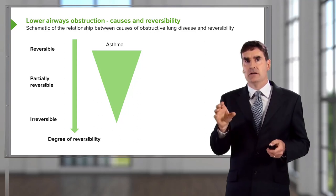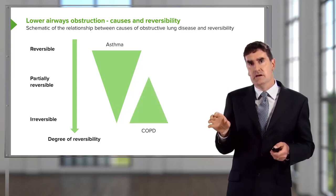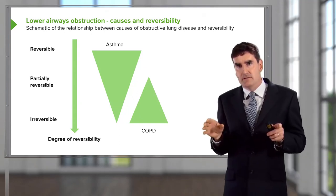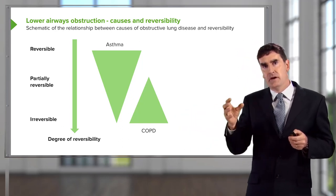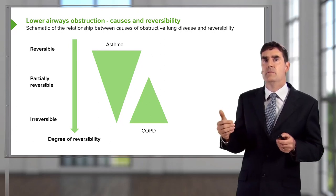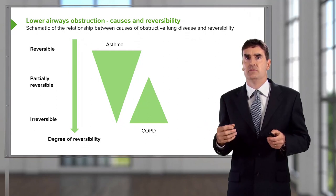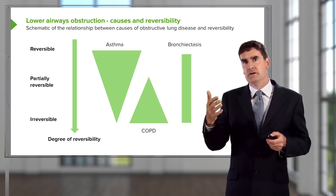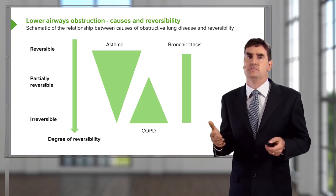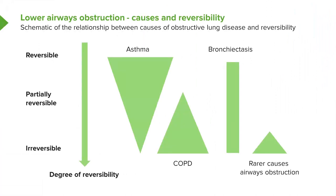Asthma is largely a reversible airways disease, and COPD is largely an irreversible airways disease. But there's such a large range of types of asthma and COPD that there is an overlap. Some patients with COPD have a degree of reversibility. And some patients with asthma — especially those who've had disease for a very long period of time or poorly controlled disease — will develop irreversible components as well. Another airways disease, such as bronchiectasis, can also have reversible, irreversible, and partially reversible patients. Less common causes of airways obstruction generally tend to cause largely irreversible airways disease.